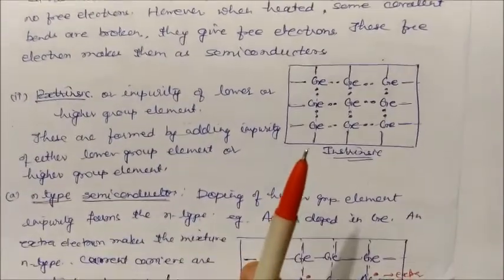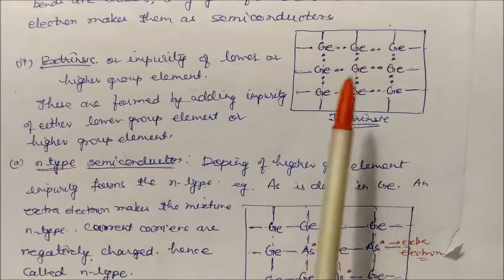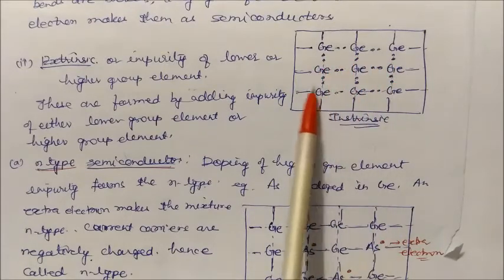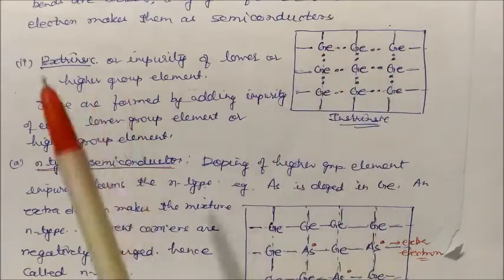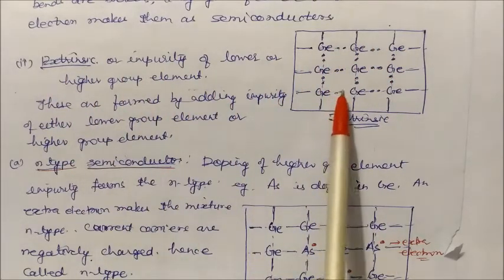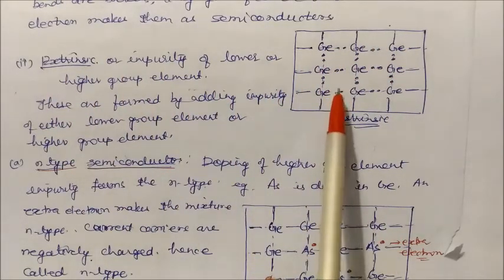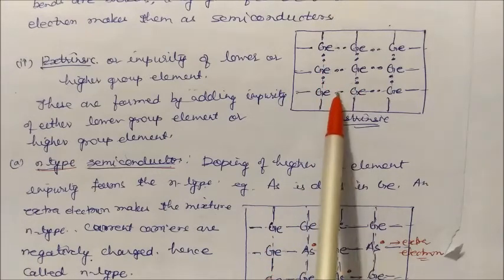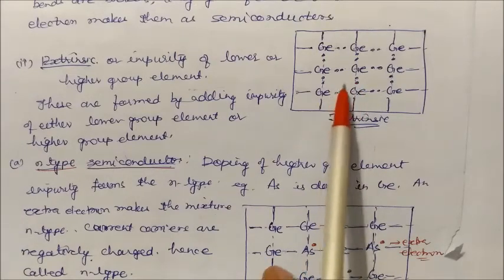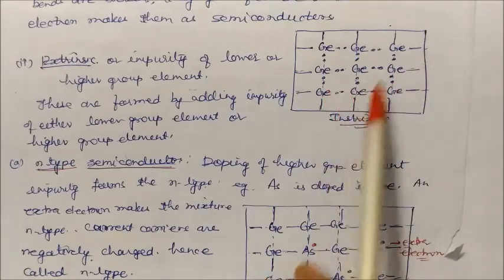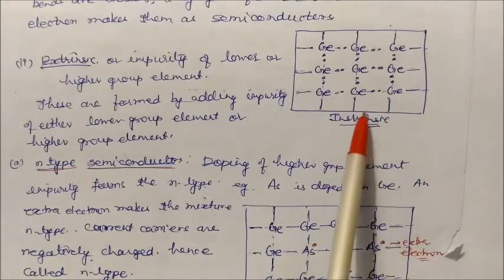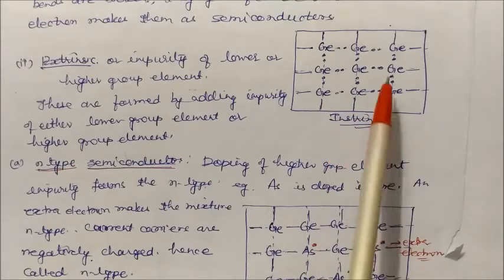In germanium, all bonds are covalent. When heated, these bonds break and free electrons are formed. Electrons move along the bonds, creating conductivity. This is the mechanism of an intrinsic semiconductor — electrons move bond-wise through the structure as bonds break and reform.